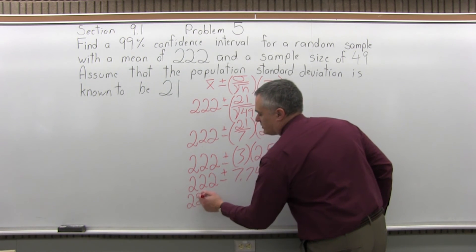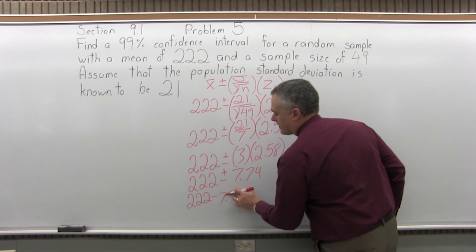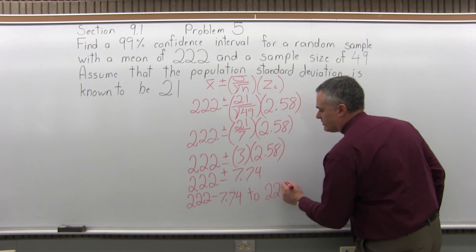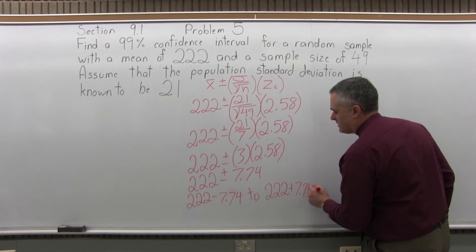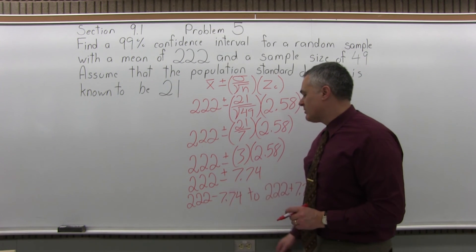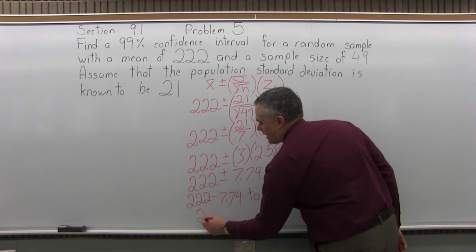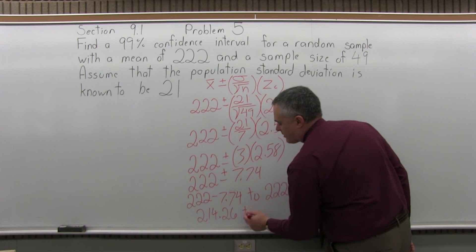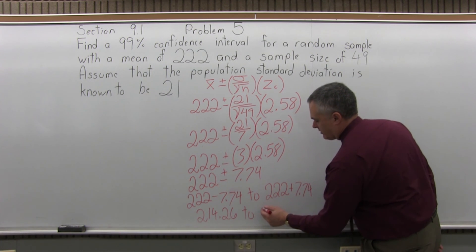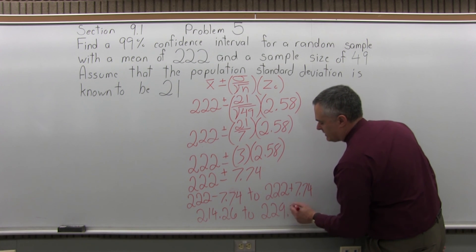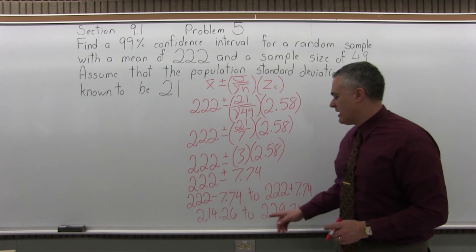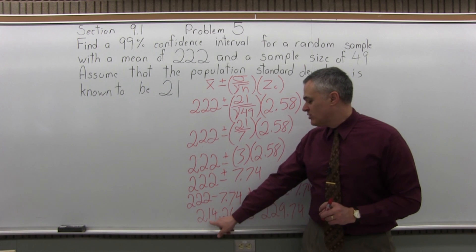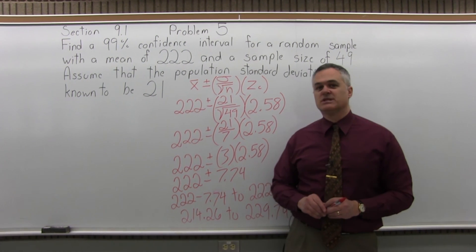The low end of my interval will be 222 minus 7.74, and the upper end will be 222 plus 7.74. On the low end, 222 minus 7.74 is 214.26. And the upper end, 222 plus 7.74, is 229.74. That's our confidence interval. We are reasonably sure that the true population mean is somewhere in that interval between 214.26 and 229.74.